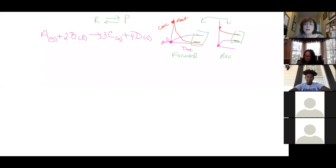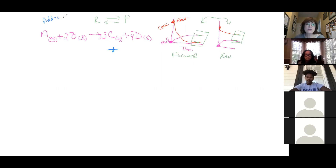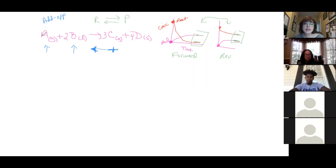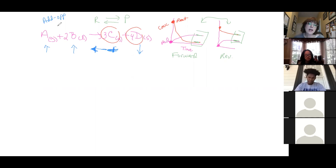Using the reaction A + B → C + D: if you add some C, the rule is add opposite — it shifts to the opposite side, away from C, toward the reactants. The concentration of A increases, concentration of B increases, and concentration of D decreases, because D is being used along with C to create more A and B.